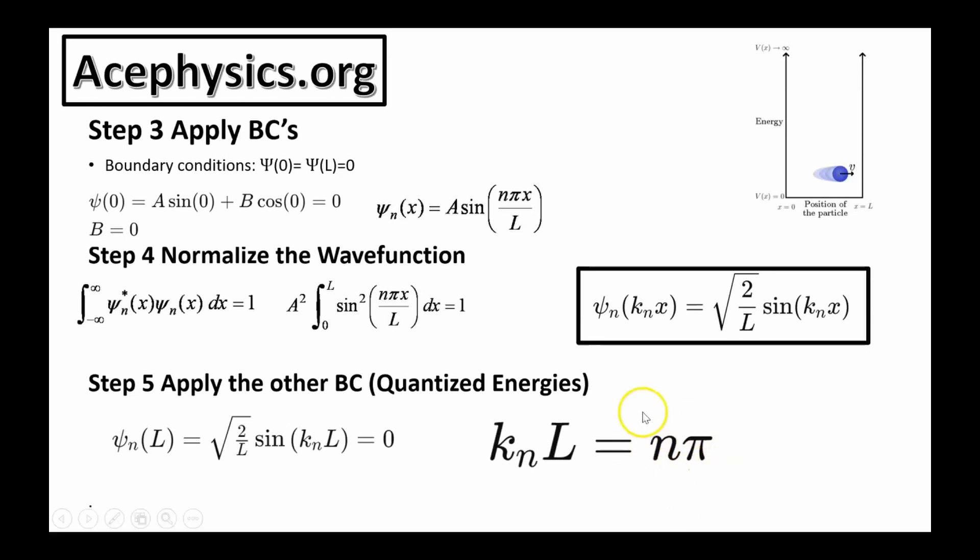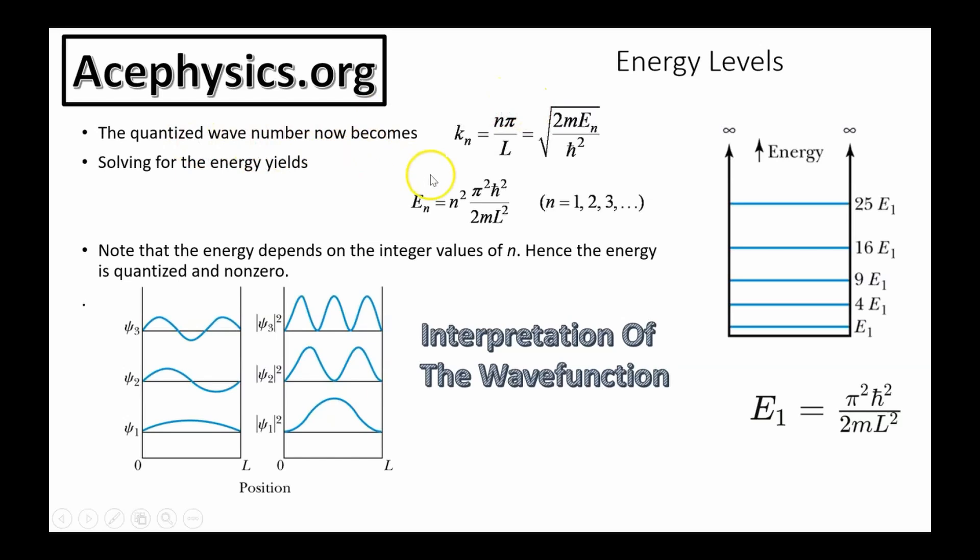This N is where the quantization condition comes from. The quantized wave number now becomes this because remember k was equal to the square root of two Me over h-bar squared, and this tells us that the energy levels are quantized. What this tells us is that for the particle in this infinite square well, it doesn't have a continuous spectrum of energies. The energies come in discrete steps. They're small steps, but they're discrete steps.